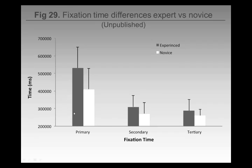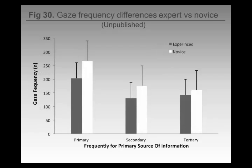Different fixation times: the experts tend to fixate on their primary source of information for much longer as a percentage of time, and they look at it less frequently — a logical interaction. This might indicate that they know exactly what information to look at and concentrate on it. Novices are not quite sure what cues to pick up on. None of this is published yet — it's literally hot off the press.